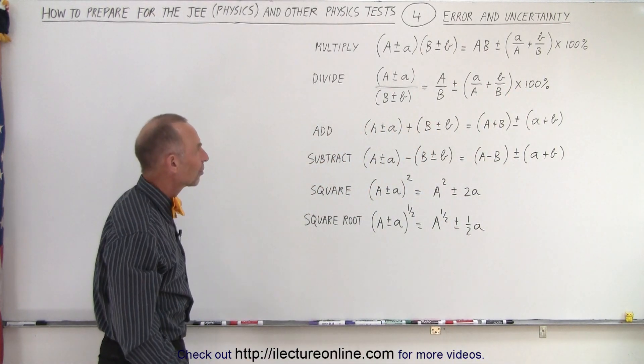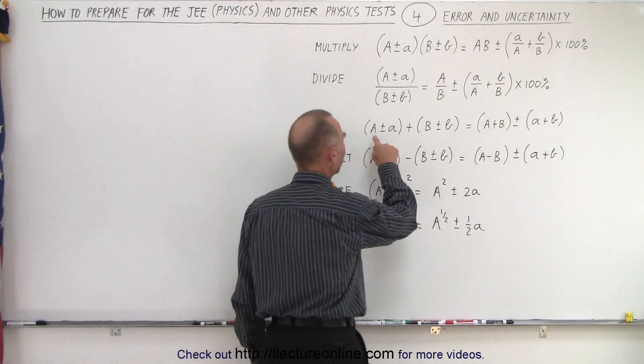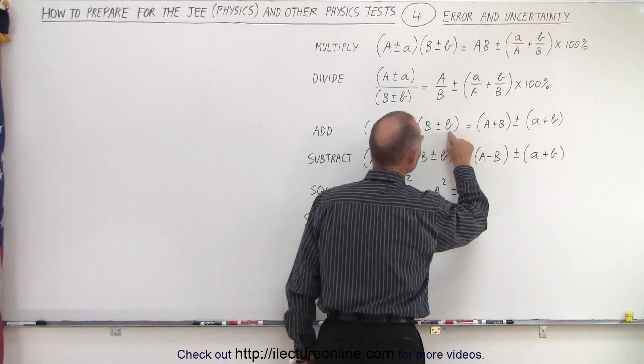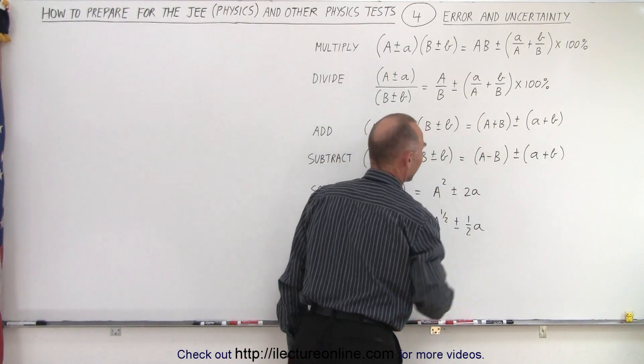What do we do when we add and subtract? When we add and subtract A plus B, notice we end up adding the uncertainties in the final answer.